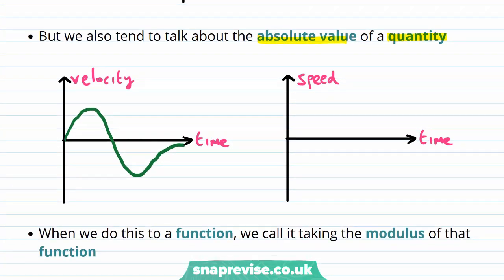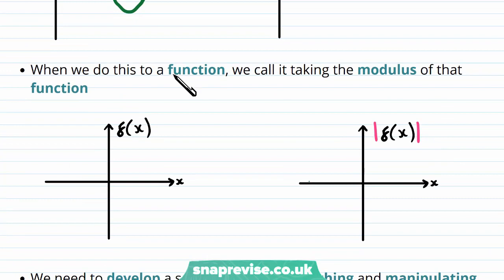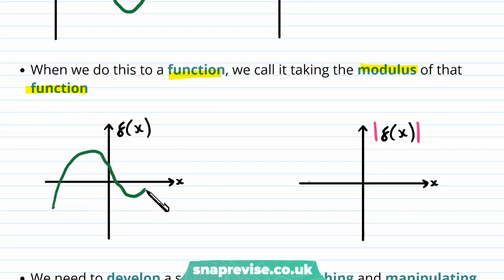Let's say we have this same velocity-time graph. We can instead look at the speed, and that would look like the following. In this case the speed is the absolute value of the velocity. When we do this to a function we call it taking the modulus of that function. Let's say the function looks like this — then its modulus would look like the following.